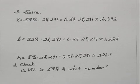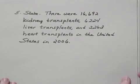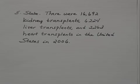So we can go to the fifth step in the equation solving process, which is to state the answer. We would say there were 16,692 kidney transplants, 6,224 liver transplants, and 2,263 heart transplants in the United States in 2006.